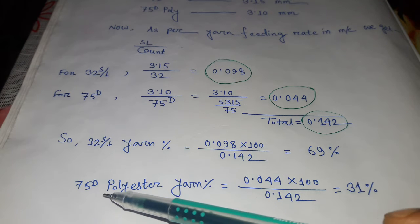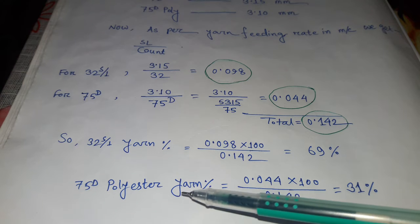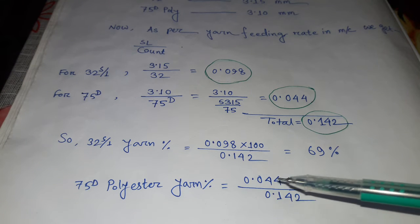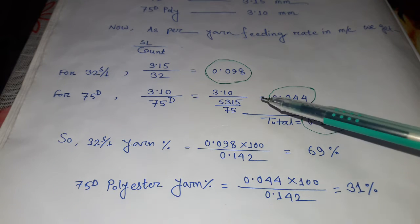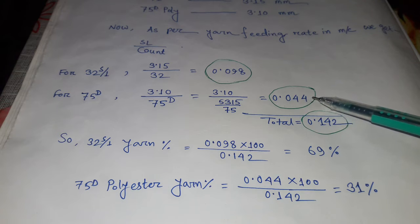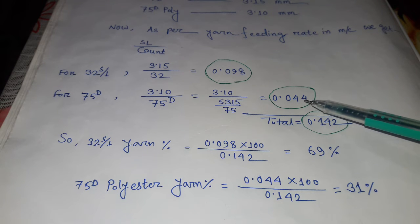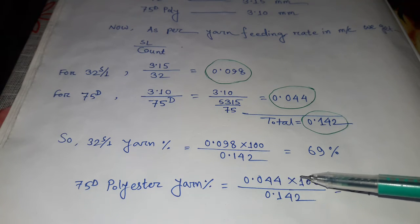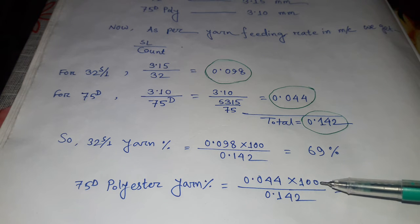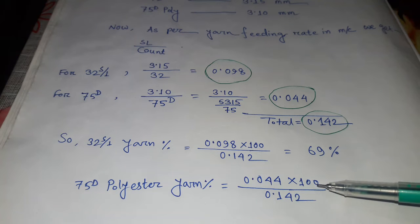And below, 75 denier polyester yarn percentage equals 75 denier polyester ratio 0.044 into 100 because we are calculating from 100 percent.